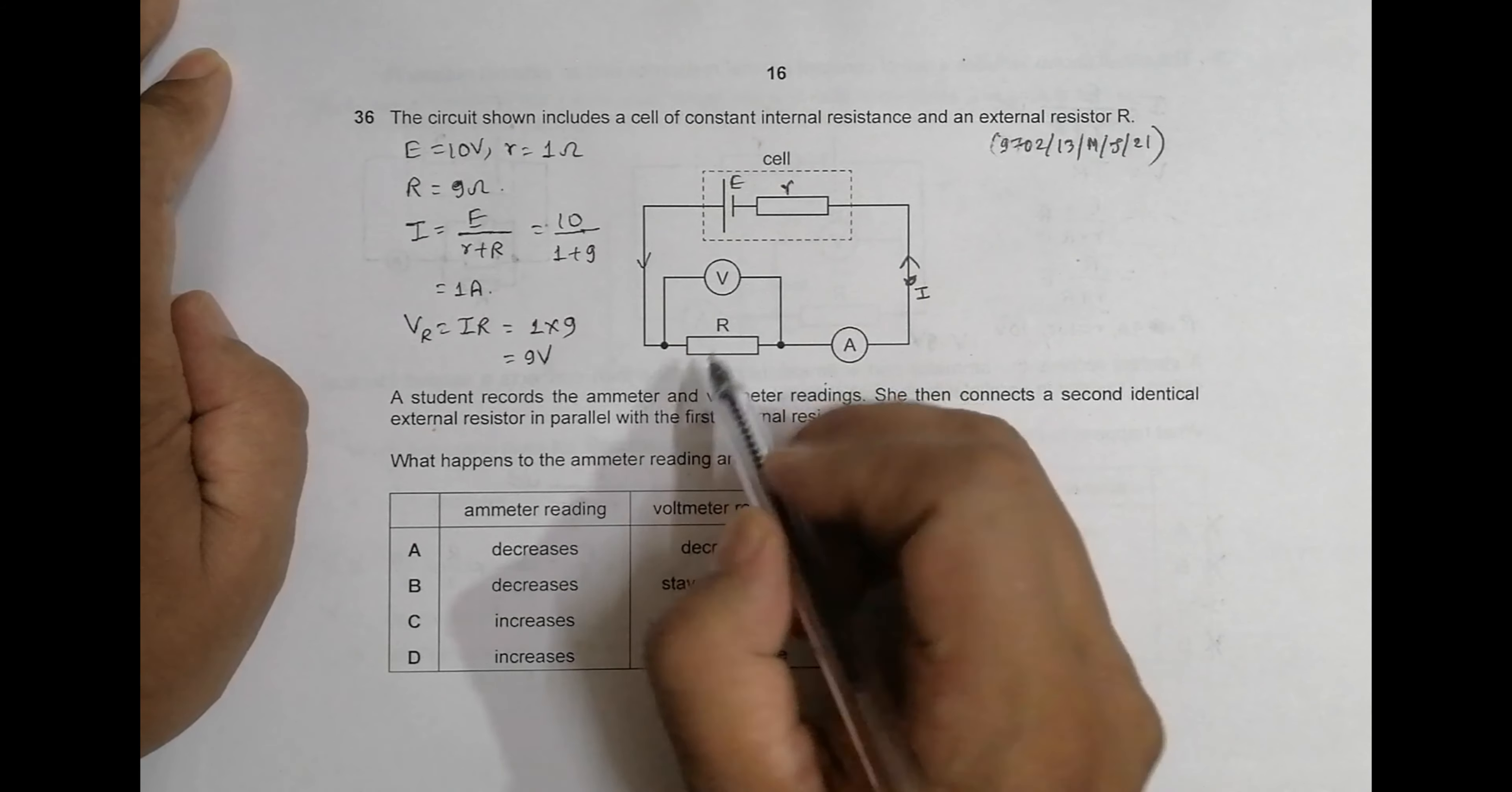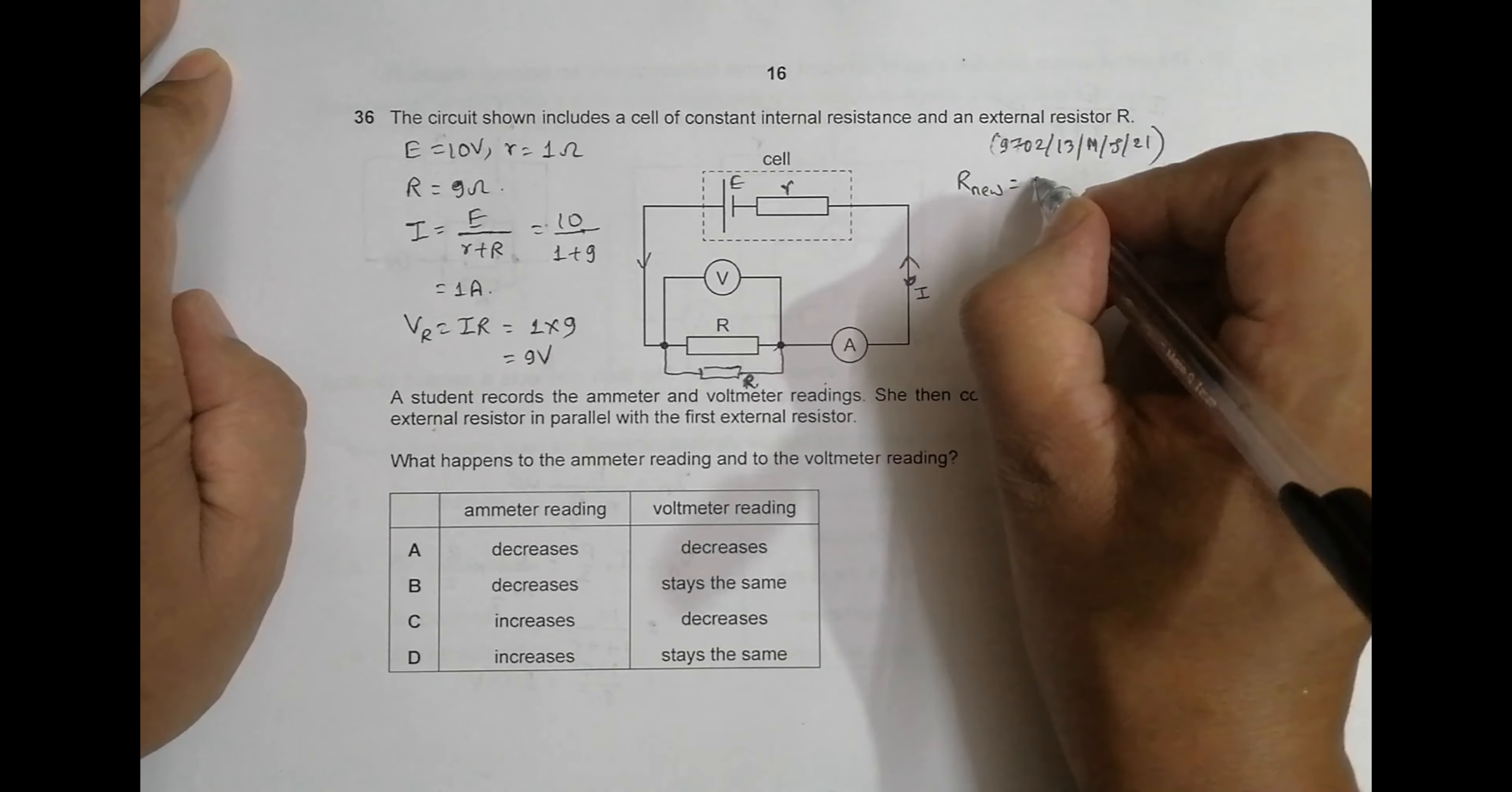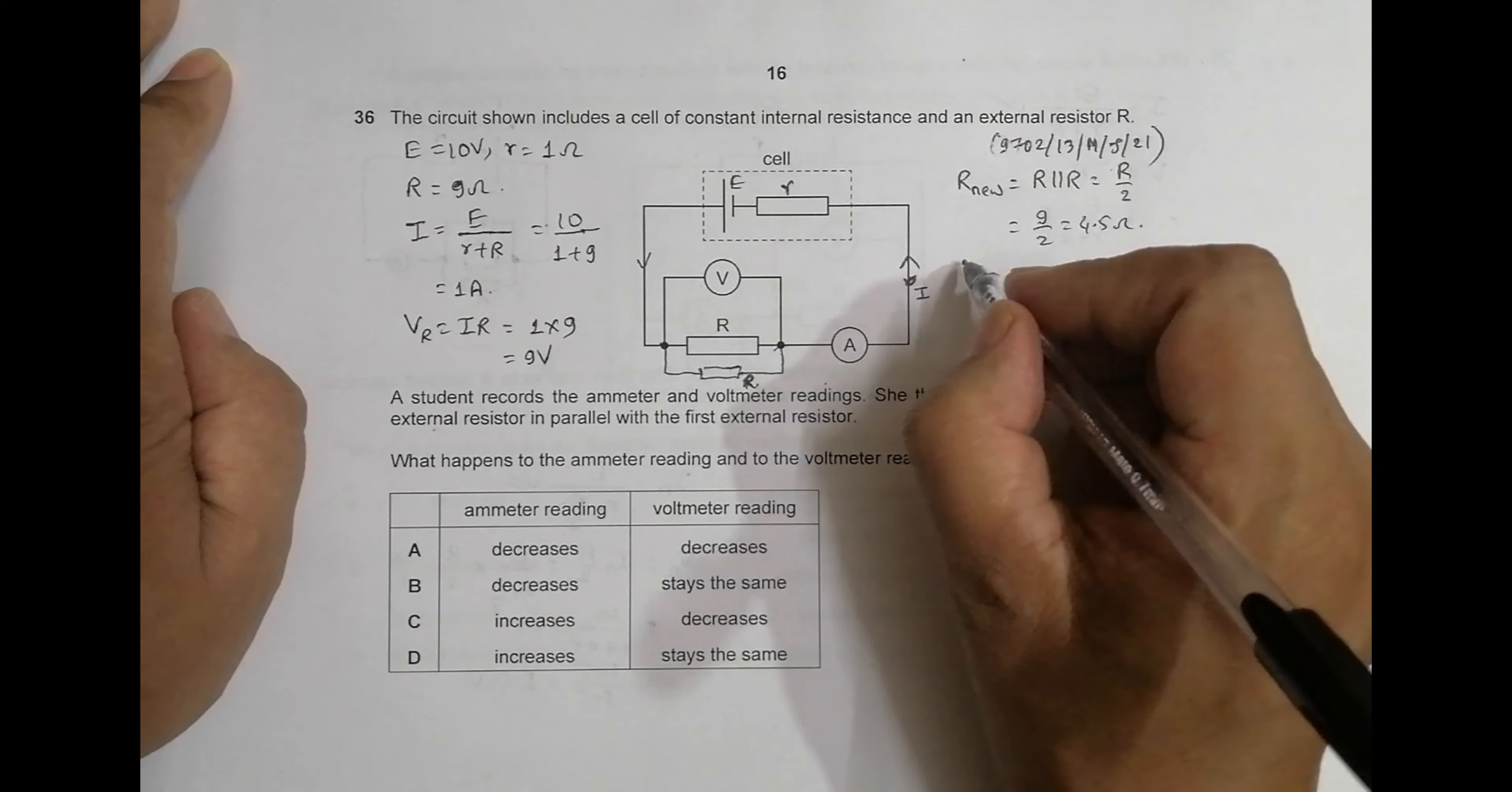Now we have to connect another resistor R here, so we connect another resistor R which is also equal to R. Now the total resistance becomes R parallel R, that's equal to R by 2, and that's equal to 9 by 2, that's equal to 4.5 ohms.